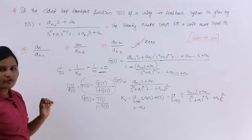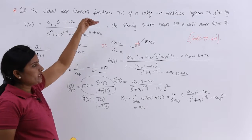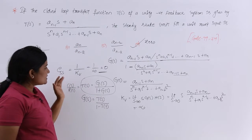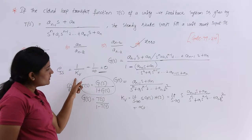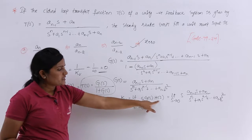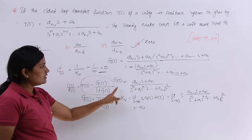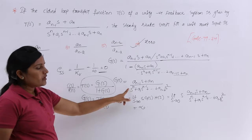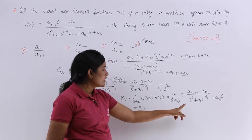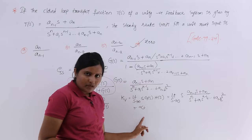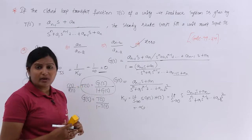To summarize: they gave the closed loop transfer function and we needed to find the steady state error for a unit ramp input, calculated as 1/Kv. Since we didn't know G(s), we derived it from T(s). Substituting G(s) and H(s) = 1 gave us Kv, which we substituted into the steady state error formula — this procedure earns two marks in the gate exam.